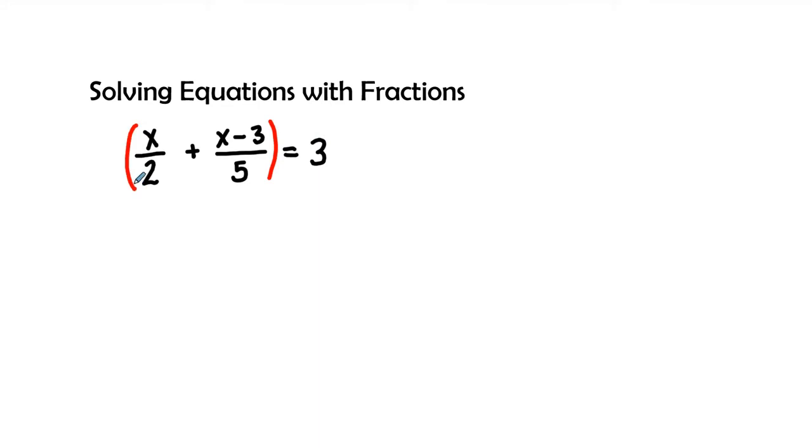We have a 2 and a 5, so the common denominator is going to be 10. We're going to multiply both sides of the equation by 10.